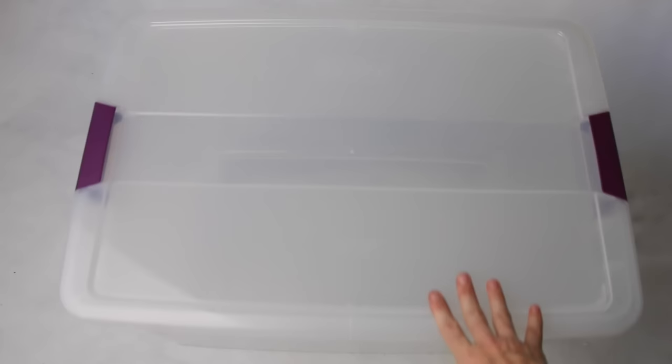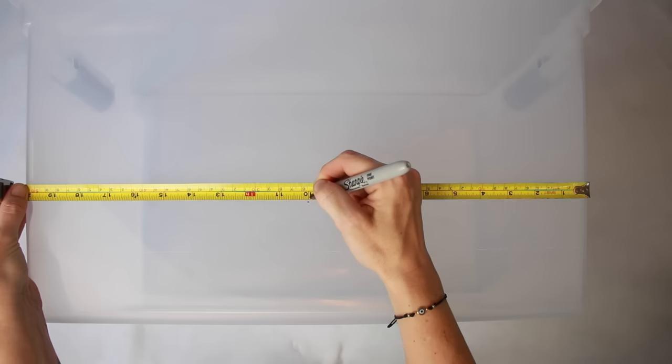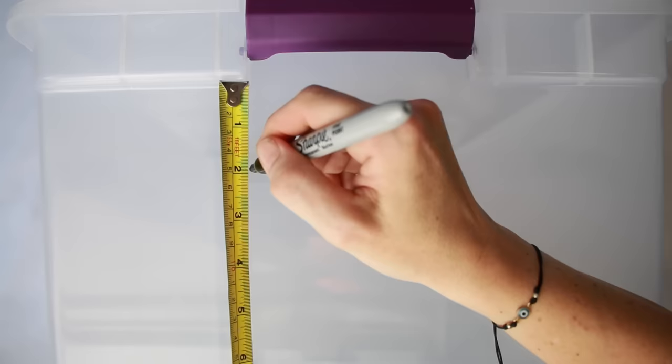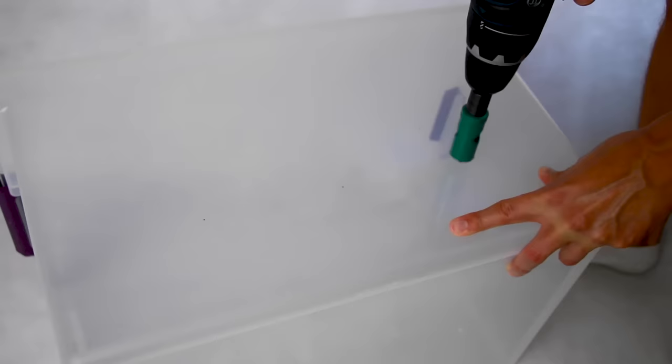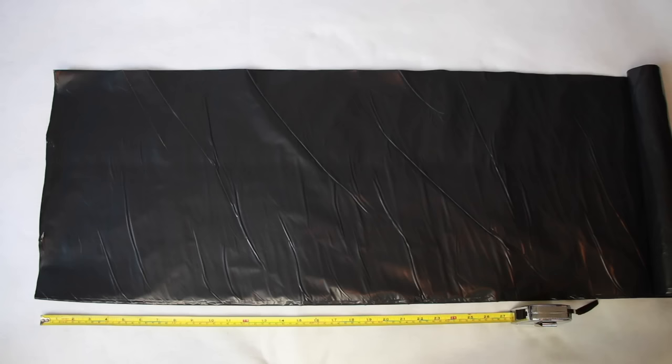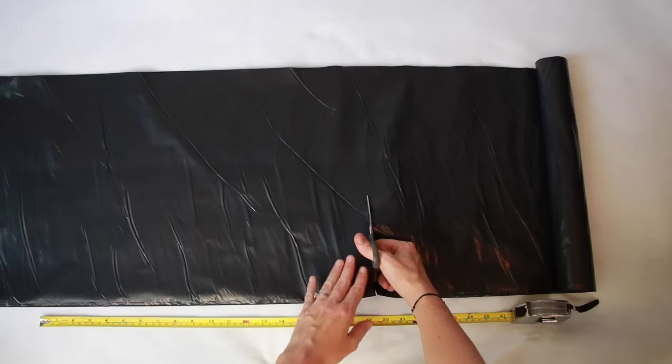After the bag is fully colonized, now it's time to make our monotub. First, you will need a 66-quart Sterilite tub with a clear lid. Next, we need to drill ten one-inch holes around the tub. I like to place mine four inches from the bottom on the long side and two inches from the top on the short side. Then, carefully drill the holes in the monotub.